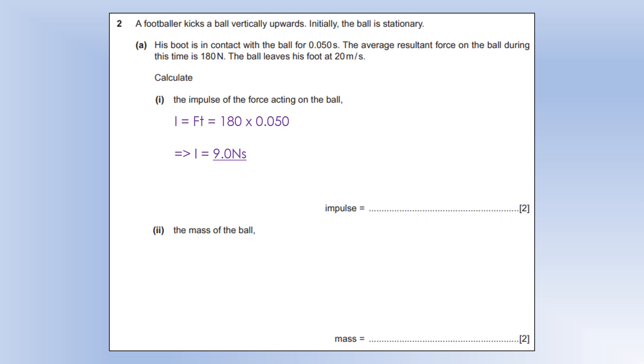Calculate the mass of the ball. So impulse is change in momentum. So that means the momentum has changed by 9 newton seconds. Change in momentum would be mass times the change in velocity. So therefore, the mass is going to be the change in momentum divided by the change in velocity. So it's going to be 0.45 kilograms.